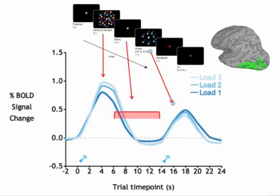The important point is that this slow event-related design allows isolation and estimation of brain activity from discrete events within multi-step trials such as this short-term memory task — when events within the trial cannot be randomized. You can't put the memory delay before the information to be remembered, so the order sample → delay → probe must always occur in that sequence, necessitating a slow event-related design. Going forward, we'll see many examples of how variants of these three basic design types — block design, fast event-related design, and slow event-related design — can be used to study the neural bases of human cognition.